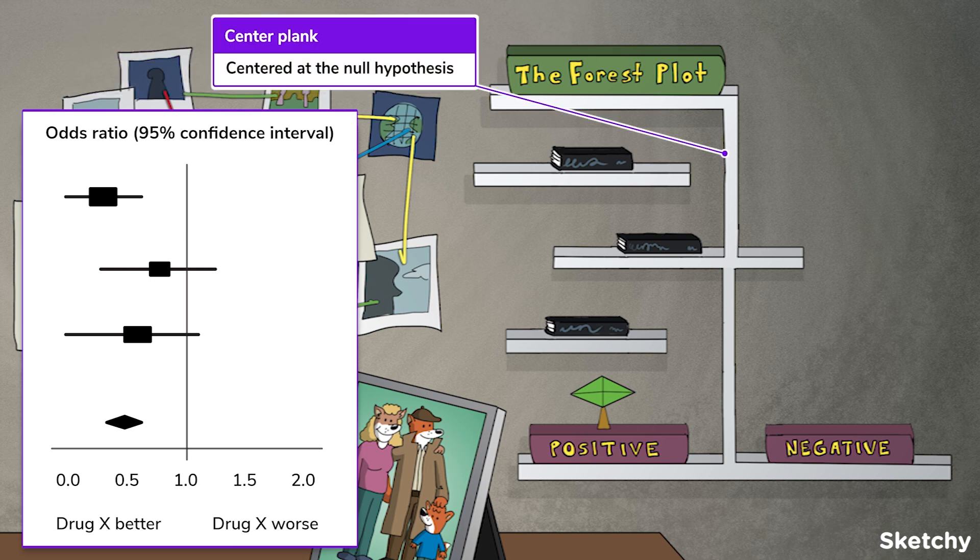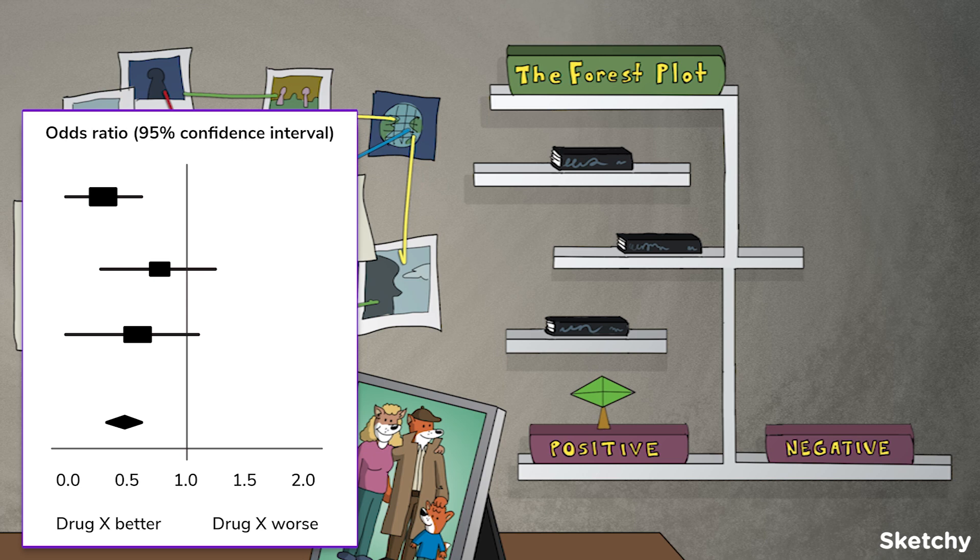Notice the vertical plank at the center of this stack? This represents the center of the forest plot, which is centered around the null hypothesis. The null hypothesis is usually placed at an effect size of 1, or 0 if you're looking at mean differences, meaning that there is no difference between your comparator groups. The books themselves represent the effect measures of the individual studies included in the meta-analysis.